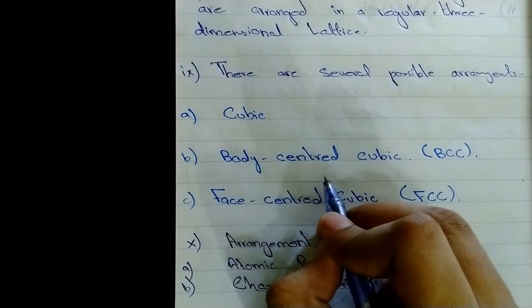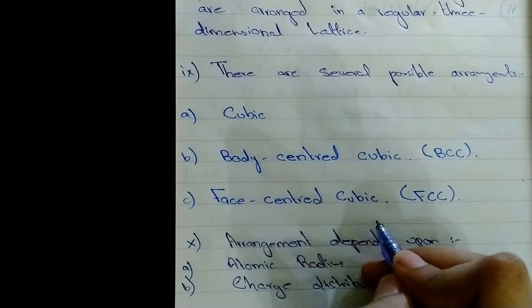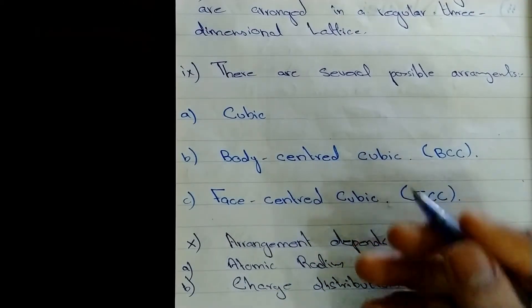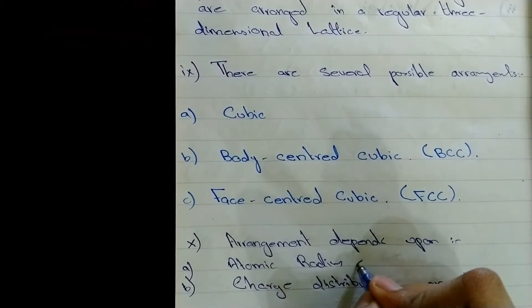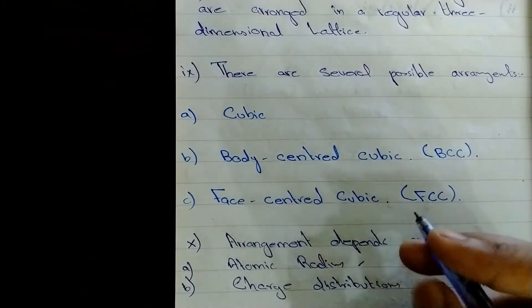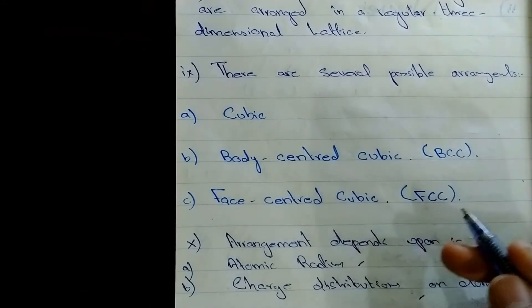The first one is the cubic structure. The second one is body-centered cubic. And the third is face-centered cubic. And the arrangement of atoms in a crystal structure depends upon atomic radius and charge distributions on atoms.